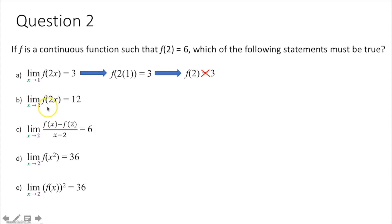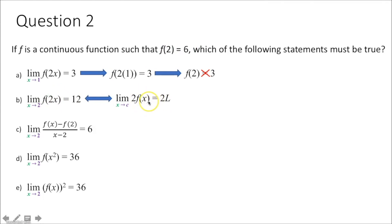Part b tests the constant multiple rule: the limit as x approaches c of some value times f of x equals that value times your limit. We know the limit as x approaches 2 of f of x equals 6. However, f of 2x is not the same as 2 times f of x — here you're multiplying 2 to your x value, not your y value. So this cannot be true. If it had been the limit as x approaches 2 of 2 times f of x equals 12, that would have been true.